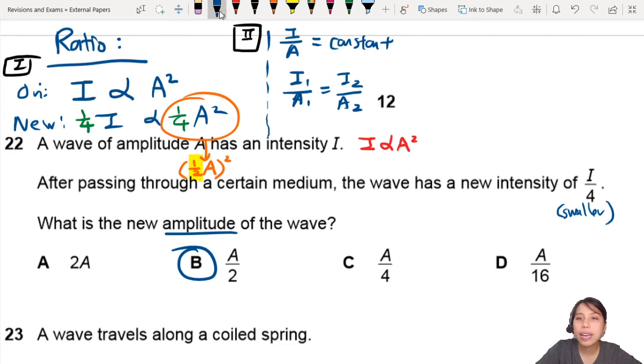So the next line, I'm going to say I1 is just I. What is A1? A. What is I2? I over 4. What is amplitude 2? I don't know. That's what I'm trying to find. Amplitude 2. So let's rearrange everything. You will have the amplitude that you are trying to find will be I over 4 times A over I.